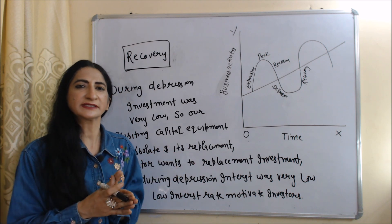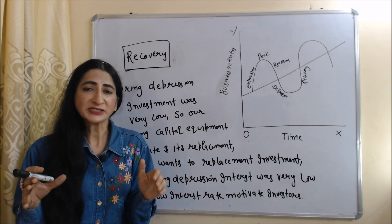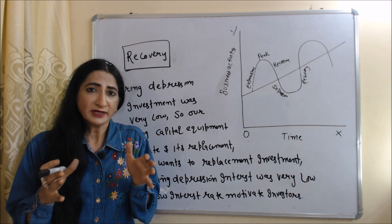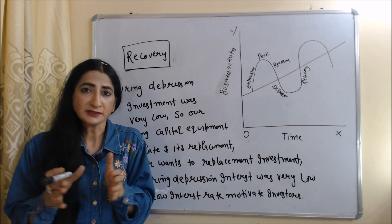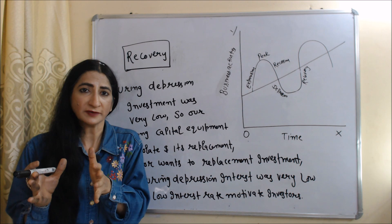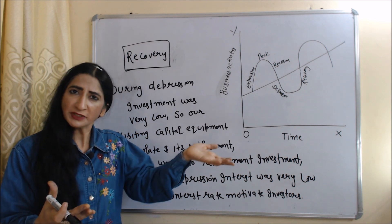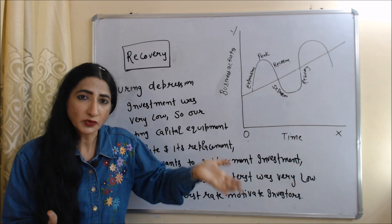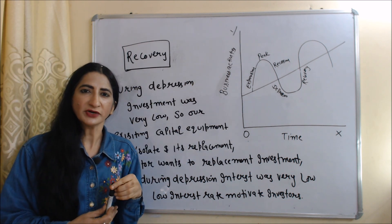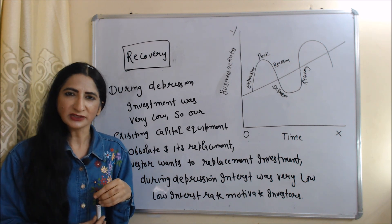Now, how does recovery start under the Keynesian theory? During depression, investment was very low, so existing capital equipment becomes obsolete and needs replacement. Investors decide to do some replacement investment. Also, during depression the interest rate is very low, and this low interest rate motivates investors to take more loans from banks and invest more money in business. As a result, investment increases, and as investment increases, output, employment, and income also increase. Recovery starts in the economy. This is all about Hawtrey's Monetary Theory and the Keynesian Theory of Business Cycle.